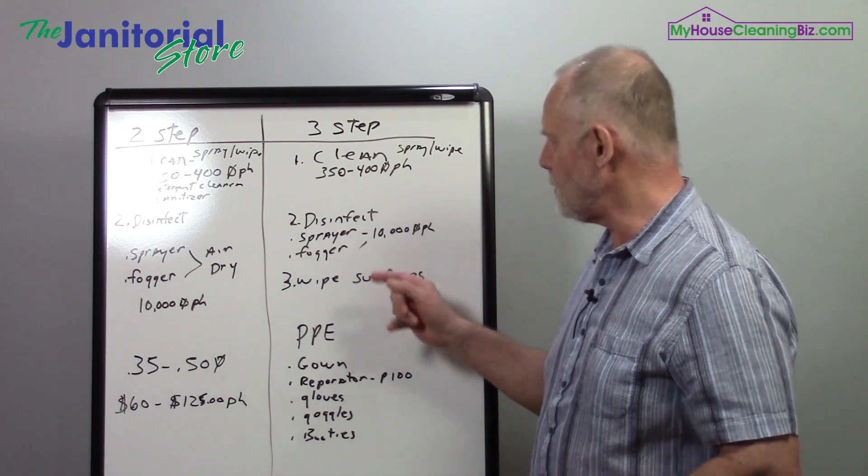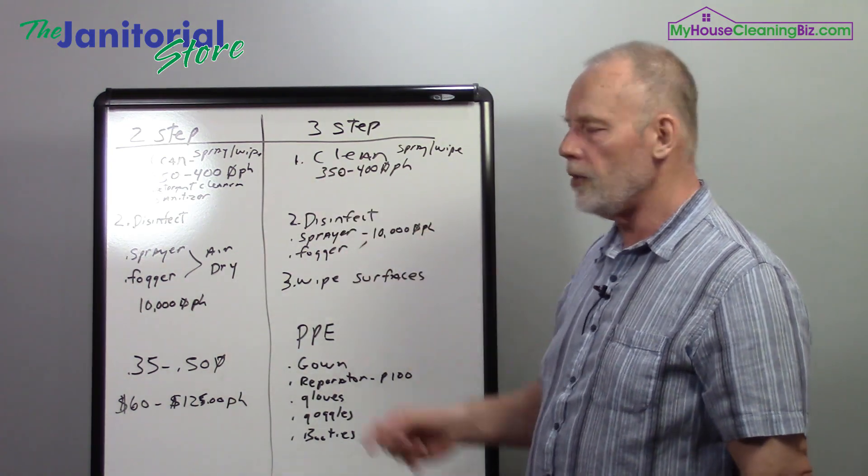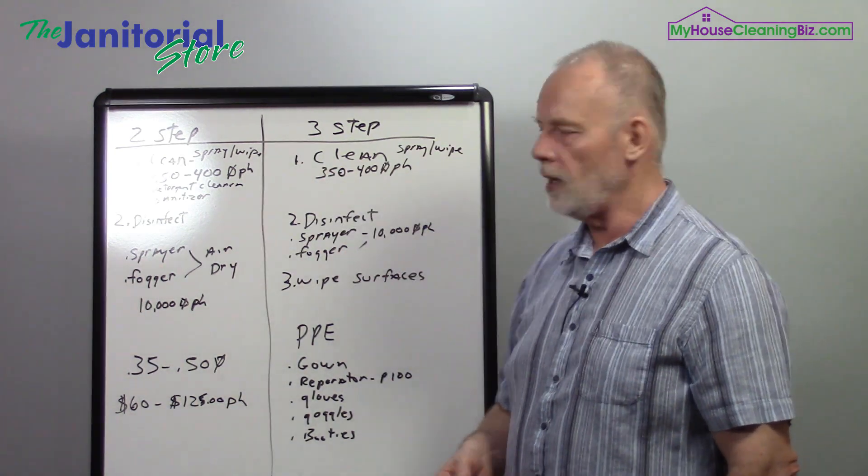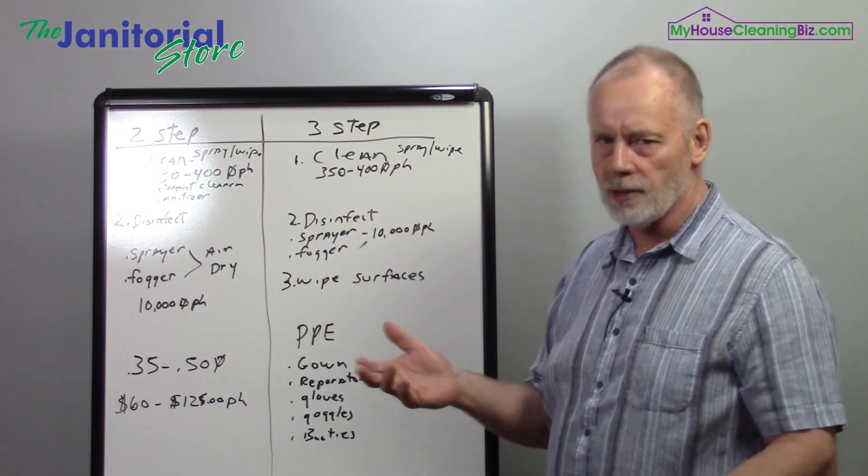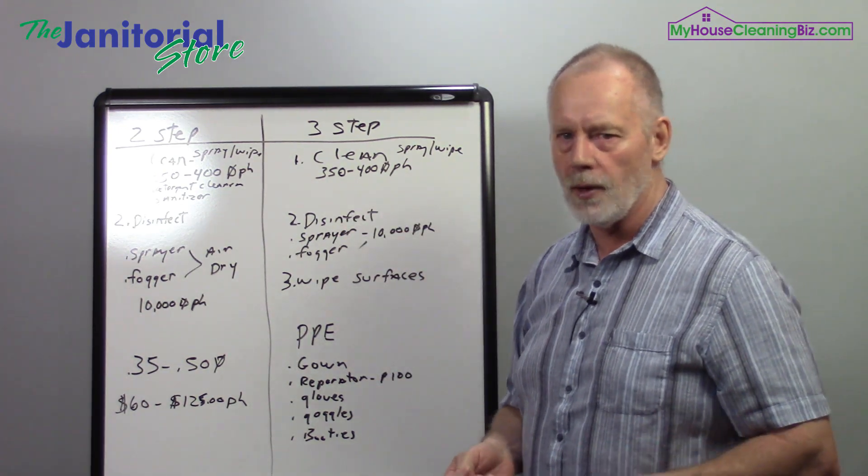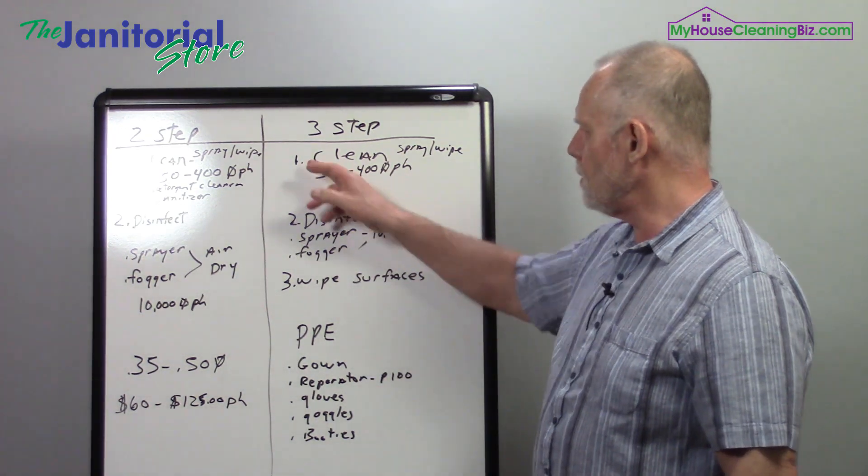A three-step process is, again, you're going to start with your spray and wipe. Again, you've got the same production rates, approximately 350 to 400 square feet per hour. That would be one team member.